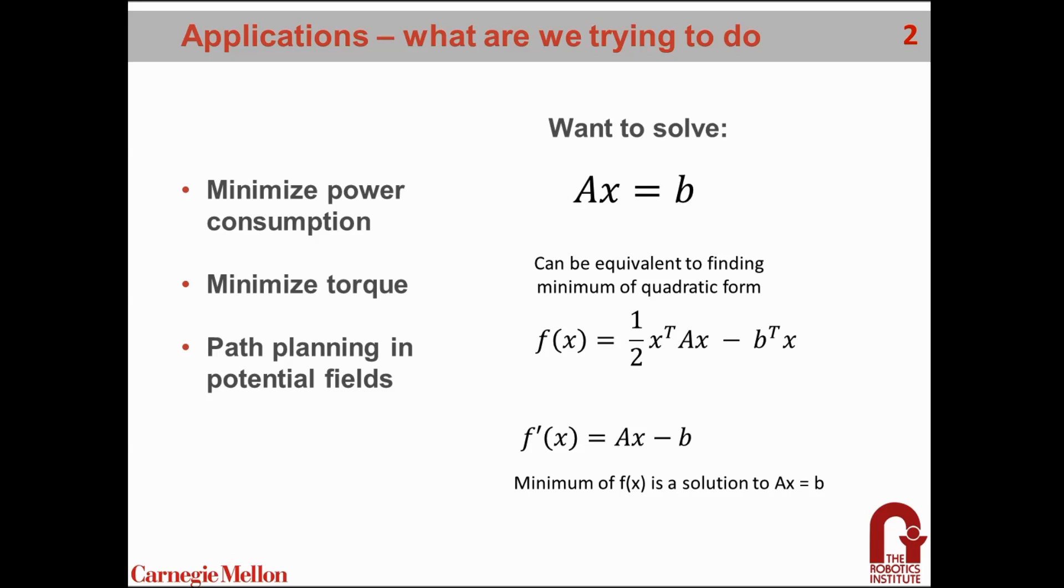This also has applications in solving linear systems of equations in the form ax equals b, because they can be equivalent to minimizing the quadratic form of this equation. You can see that taking the derivative of the quadratic form gets f prime of x equals ax minus b. Setting the derivative equal to zero, we get a solution for ax equals b by finding the minimum of the quadratic form.